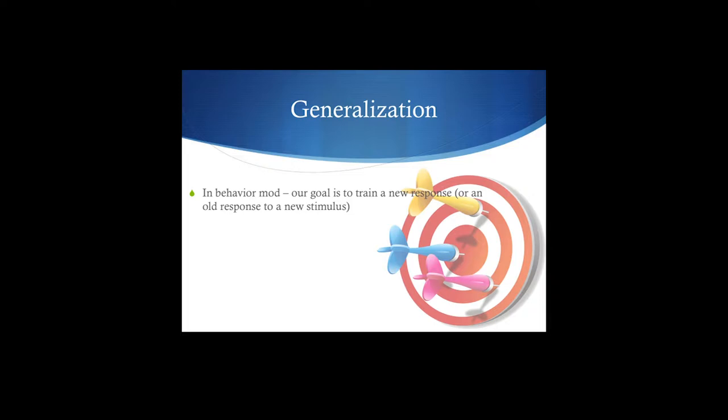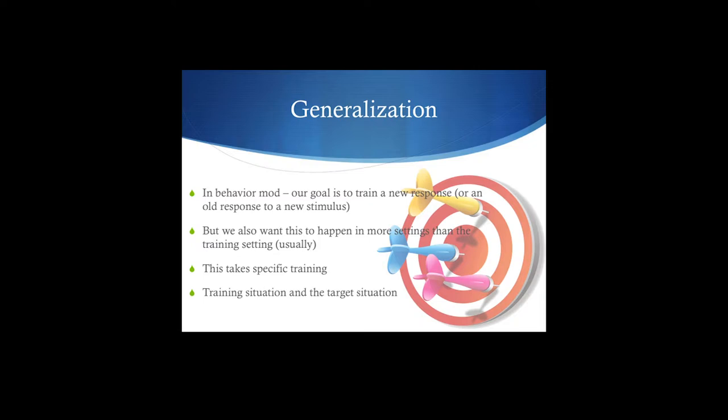Generalization involves responding differently to stimuli, responding in different ways to the same stimuli, or responding in the same way to different stimuli. We typically want whatever we're training you to do to happen in more than one setting — we call that the training setting. So we're going to have to specifically program for that. In order to program for that, we need to talk about the training situation and the target situation.